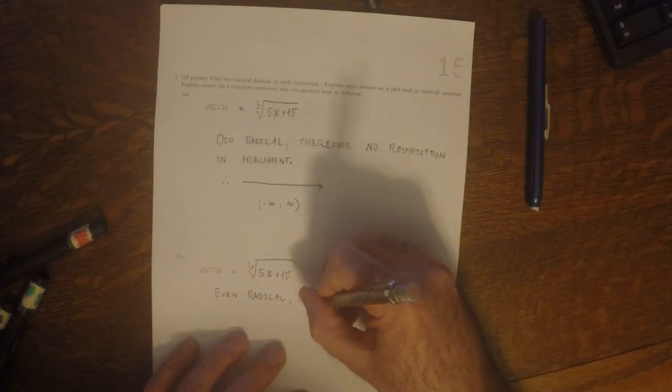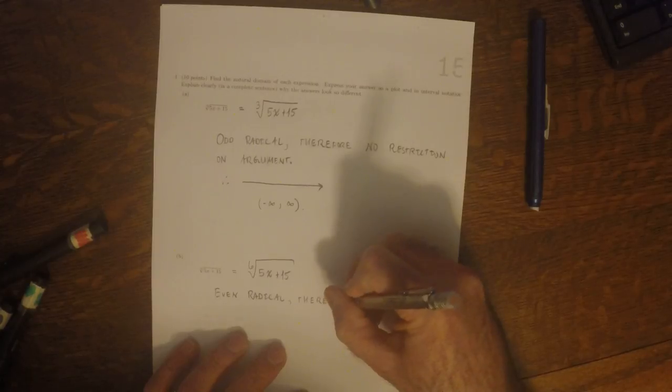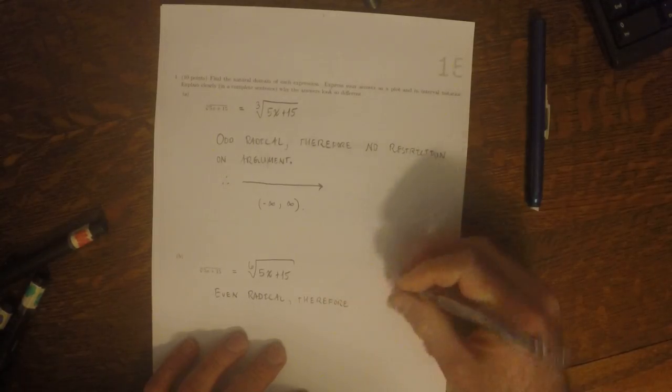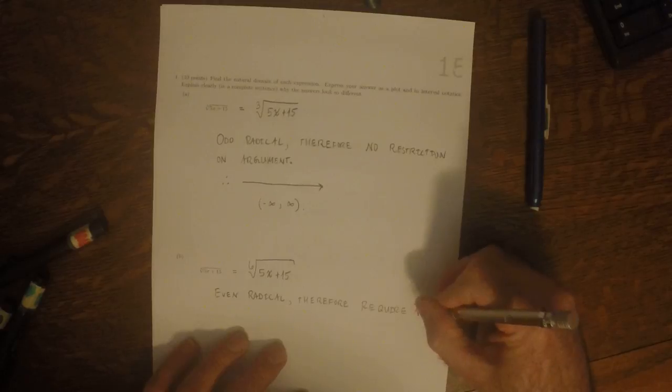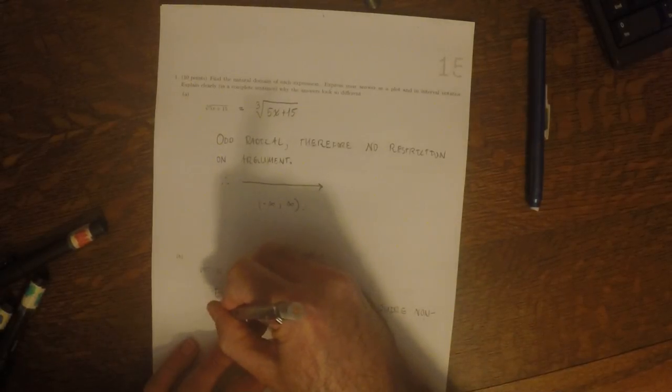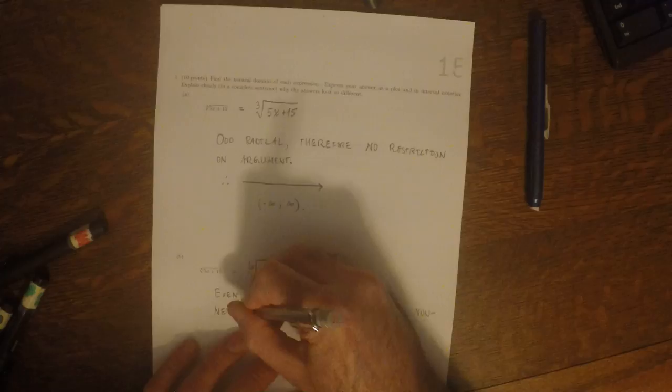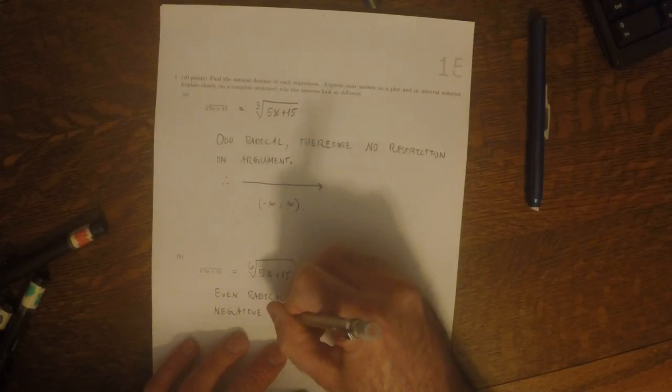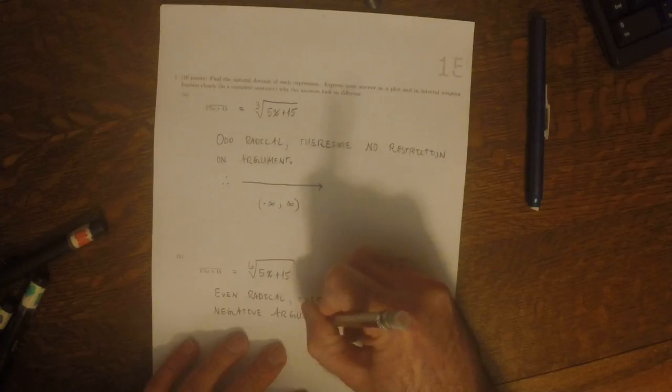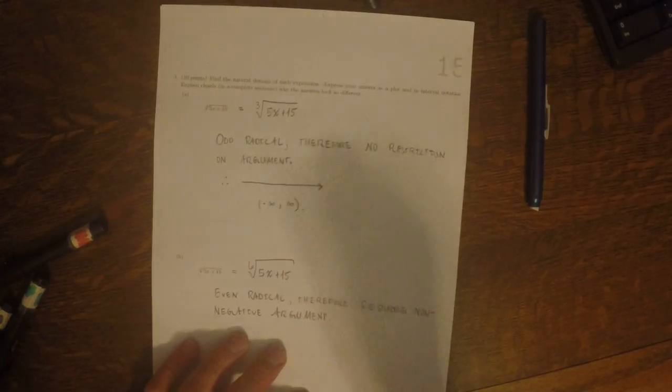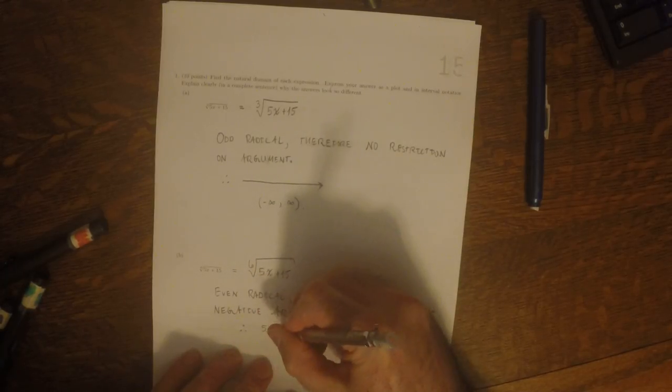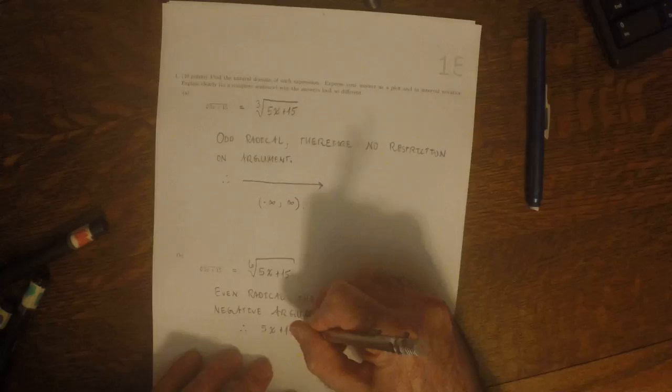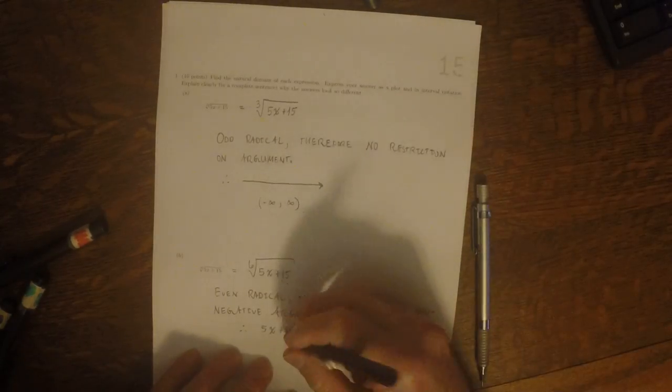And therefore, we require a non-negative argument. And therefore, what's required is 5x plus 15 is greater or equal to 0.